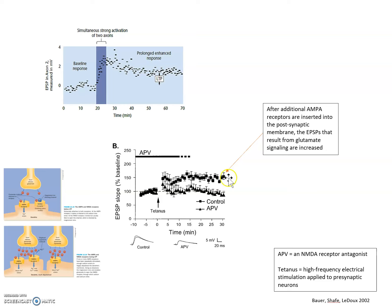So this right here is a figure from a paper, Bauer, Schaaf, Ledoux, 2002. They induced LTP in, I think it was in the amygdala, it might have been the hippocampus, I can't remember where, but this is commonly done in the hippocampus, so it may well have been there.